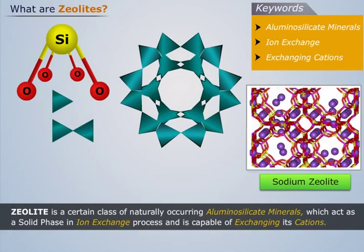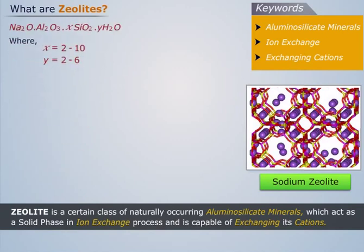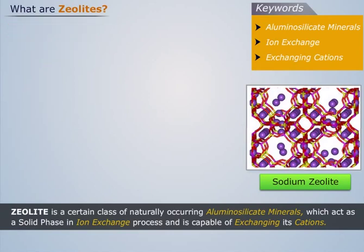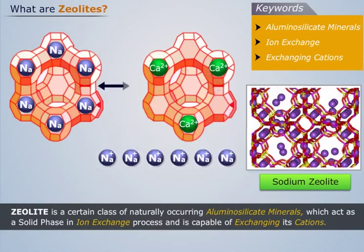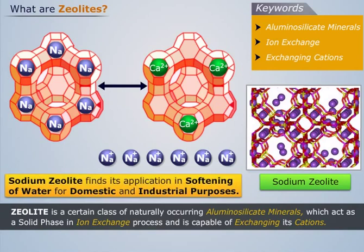The empirical formula of sodium zeolite is given. Basically, sodium zeolite is regarded as a hydrated sodium aluminosilicate, which is capable of exchanging its sodium ions for divalent ions of the alkaline earth group and for the multivalent ions of some of the metals in water. This is the reason why sodium zeolite finds its applications in softening of water for domestic and industrial purposes.